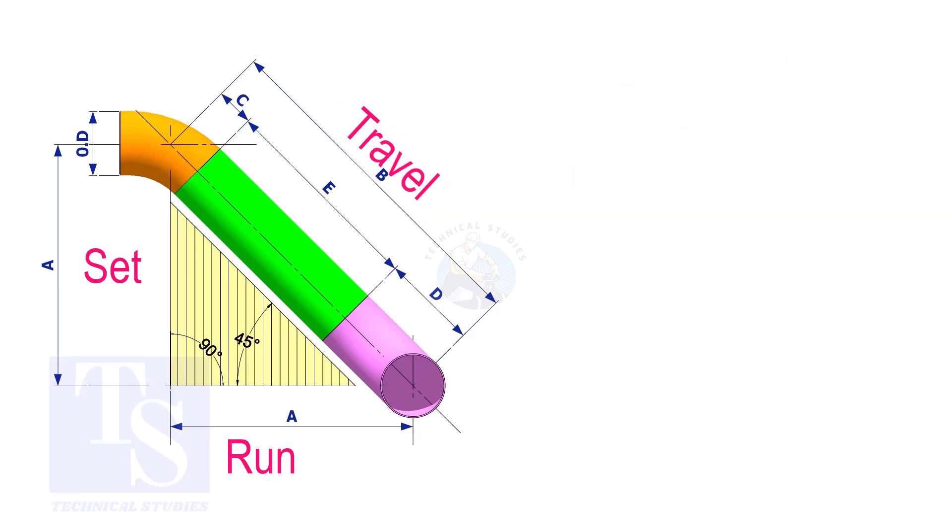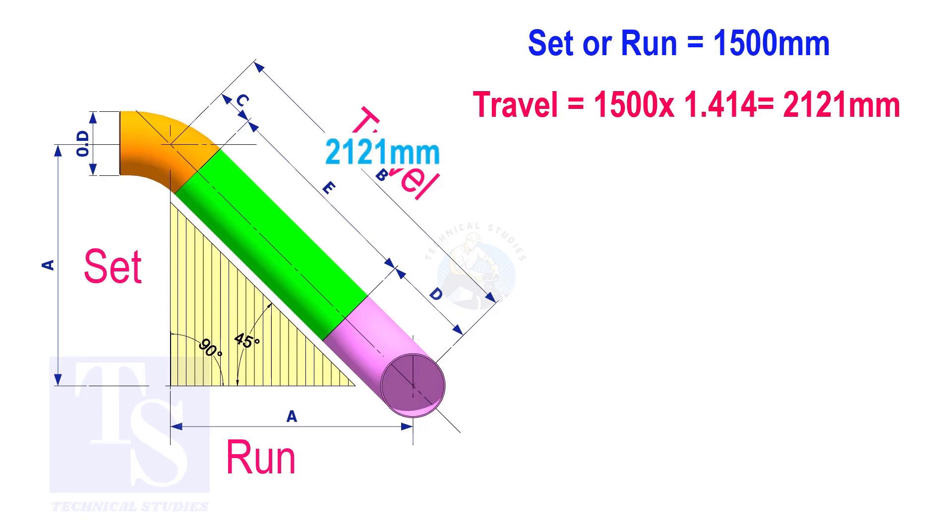Try another example. Suppose the value of the set or the run is 1500mm. The value of the travel will be 1500 multiplied by 1.414 equals 2121mm.